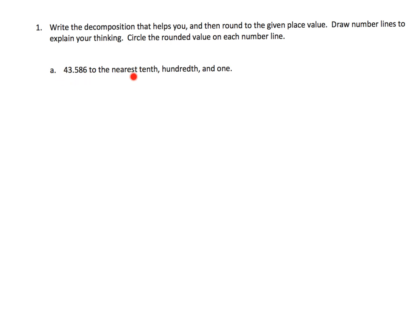So remember when it says round to the nearest tenth, that means your number line is going to go in increments of tenths. And remember the tenths is right here, that first decimal place, that 0.5.